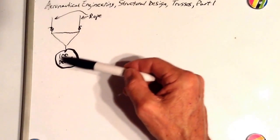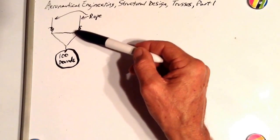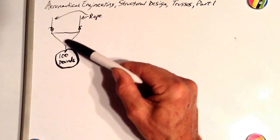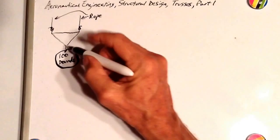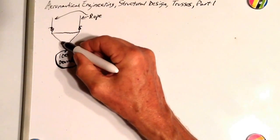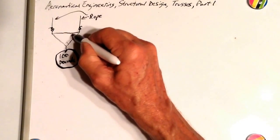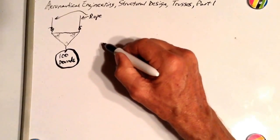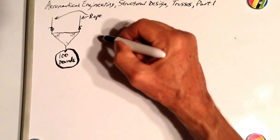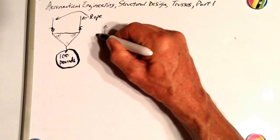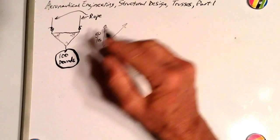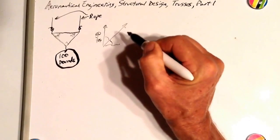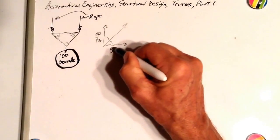If we have 100 pounds of weight hanging here, this member is lifting half of it. This member is lifting the other half, but the tension in that member is more than 50 pounds because it's pulling in this direction. Let's say this is a 90 degree angle and this is a 45 degree right triangle. If this member is pulling up that way, its vertical component is 50 pounds. At a 45 degree angle, its horizontal component is also 50 pounds.